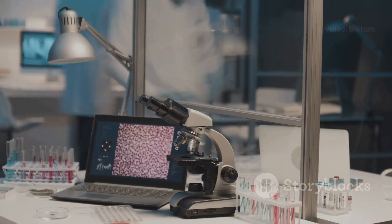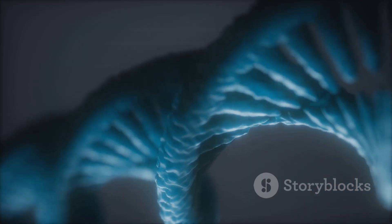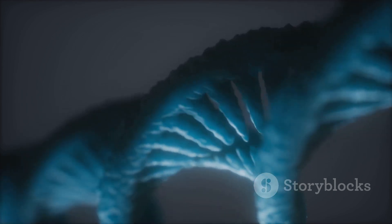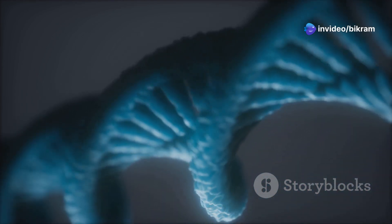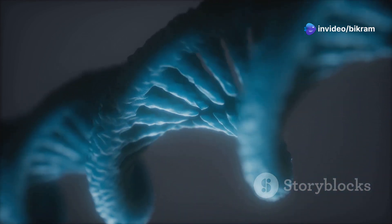This precision is crucial for the accuracy and efficiency of RNA interference. The siRNAs produced by Dicer are approximately 20 to 25 nucleotides long, with a characteristic two-nucleotide overhang at each end.